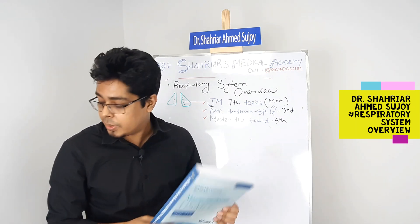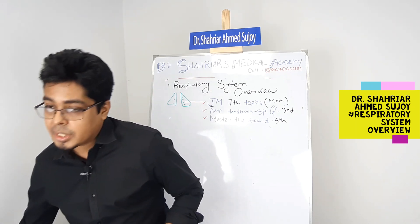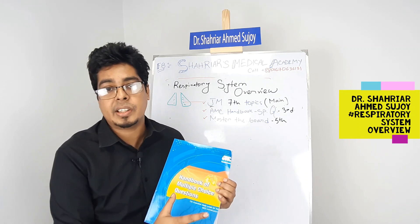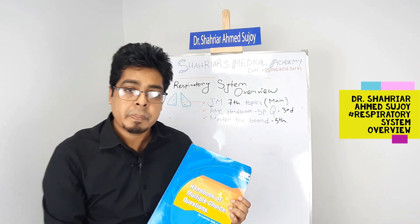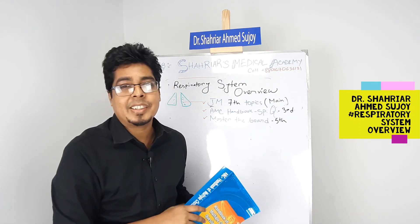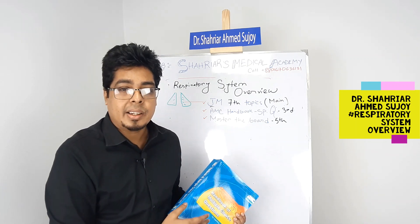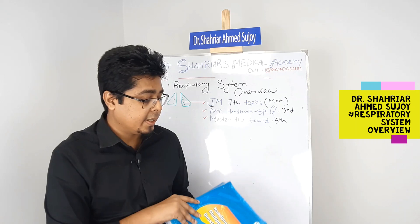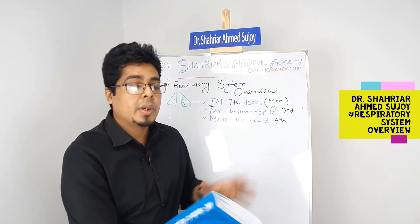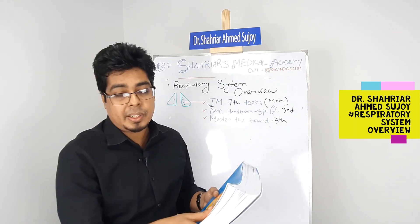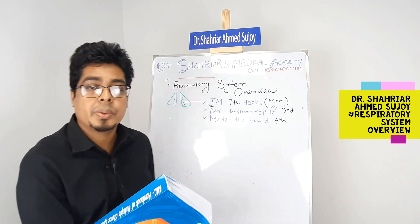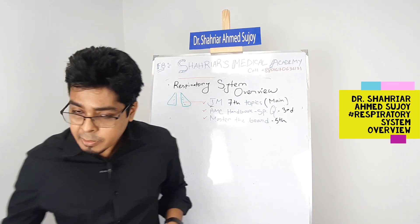The third book is the AMC Handbook. It is not organized by system — it doesn't separate respiratory from GIT — but we'll make it easy for you by identifying exactly which questions are related to the respiratory system in the main class. So to summarize: we'll make a clear summary of John Murtagh, identify the exact MCQs from the AMC Handbook related to respiratory, and highlight the key pulmonology topics from Master the Board.